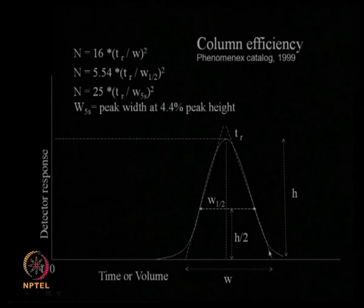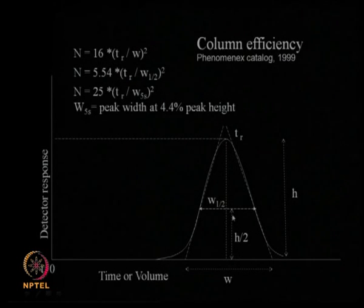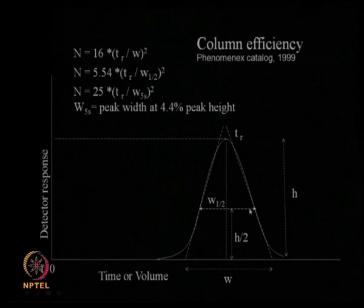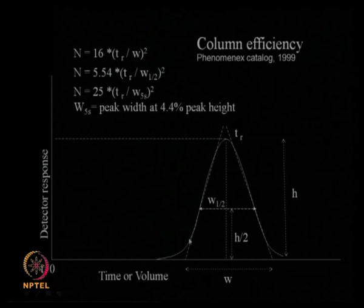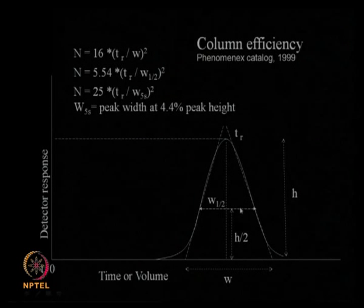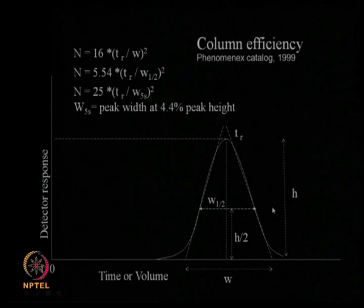The output from HPLC will be a nice Gaussian distribution. The retention time, peak height, width at half height, and width at the base are key parameters. Width at the base is determined by drawing two tangents to the Gaussian distribution. The width at half maximum is measured at half the peak height. These equations from Gaussian distribution theory can be applied to HPLC as well.